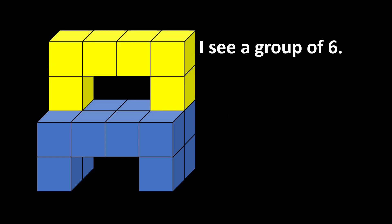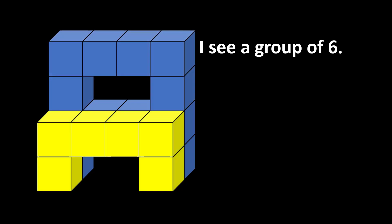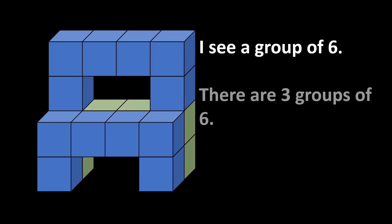Some said, I see a group of six, and described it as a bridge, or an arc, or the letter C, and then found a second group of six, and behind that a third group of six. There are three groups of six, so the total is 18 cubes.